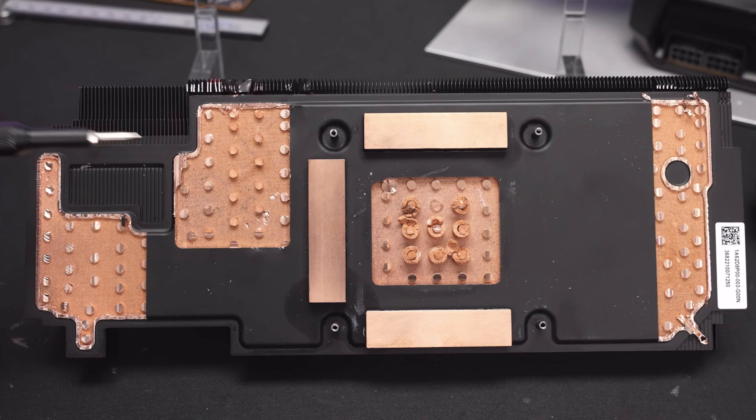So here you have the vapor chamber. It's quite a large vapor chamber actually. If you compare vapor chambers to heat pipes then vapor chambers are a very good way to transfer heat from a small area to a bigger surface. So in this case from the GPU to the Finstack.